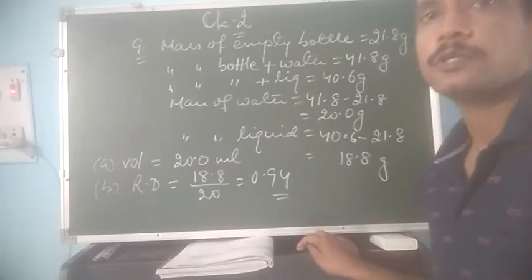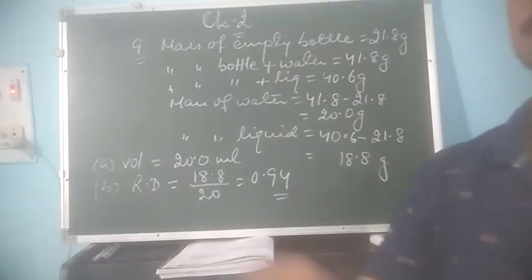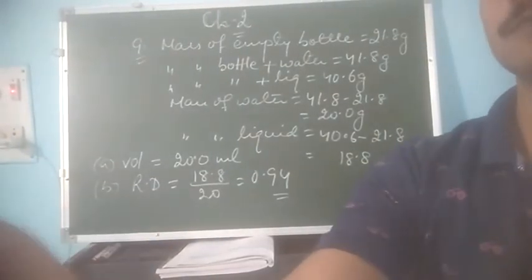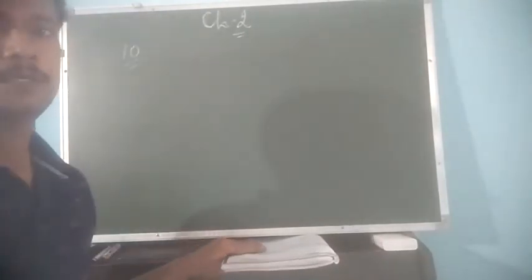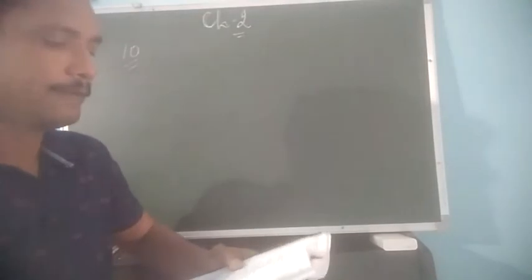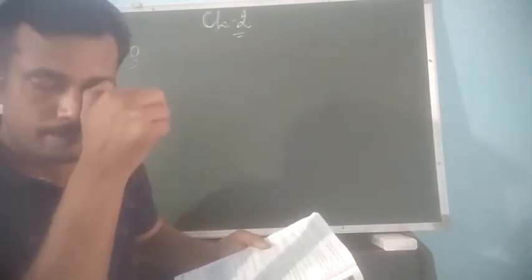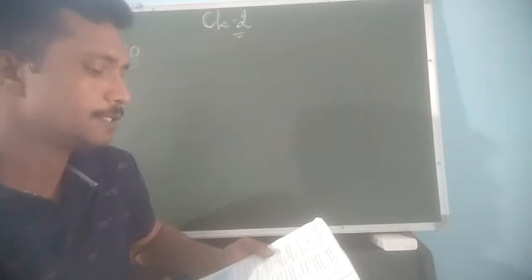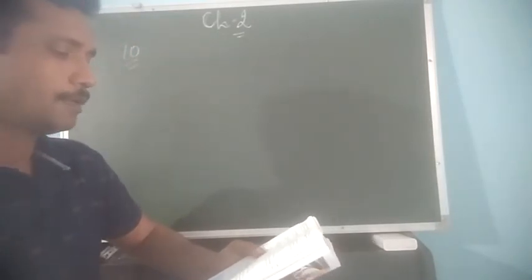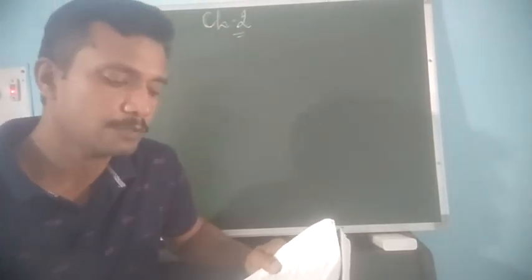So we are going to move to the next question now, that is question number 10. Now let us see what is given in question number 10. From the following observations, calculate the density and relative density of a brine solution. So we have to find out two things again using the observations.